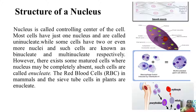Structure of nucleus. The nucleus is called the controlling center of the cell. Most cells have just one nucleus and they are called uninucleate. As shown here with the muscle cell, which has only a single nucleus.